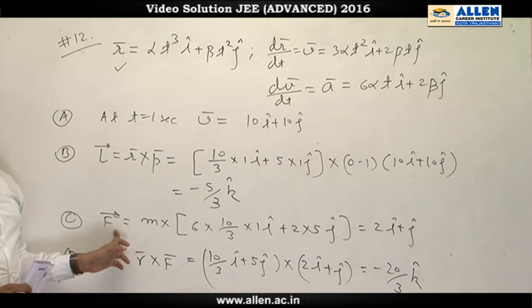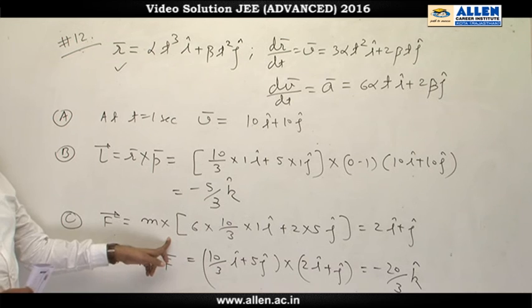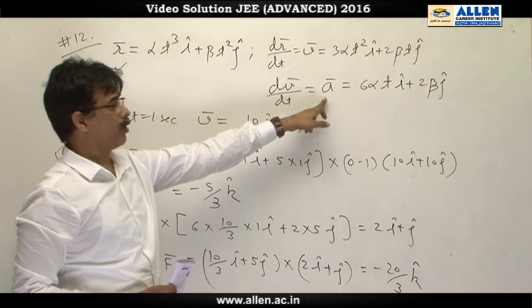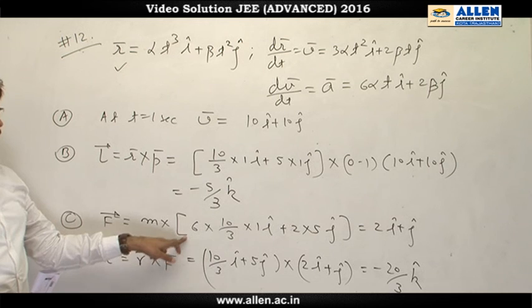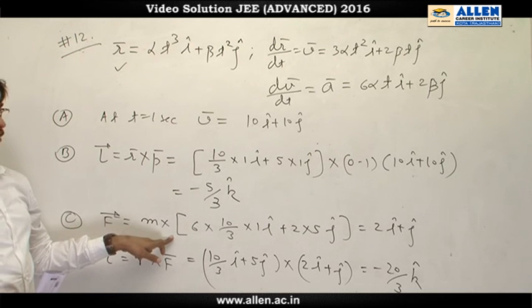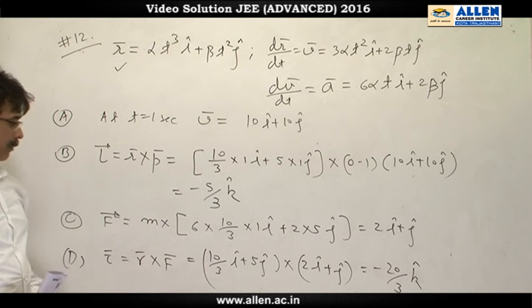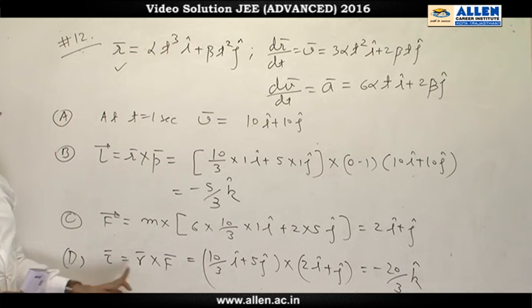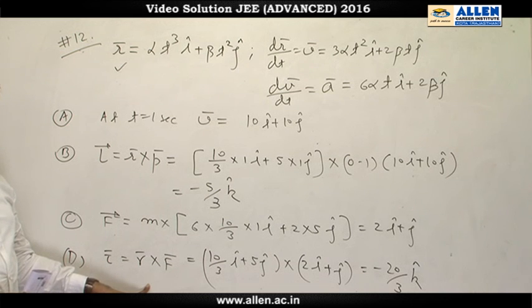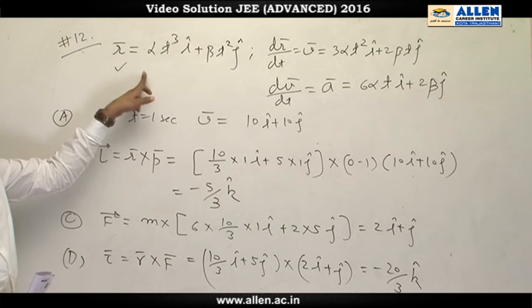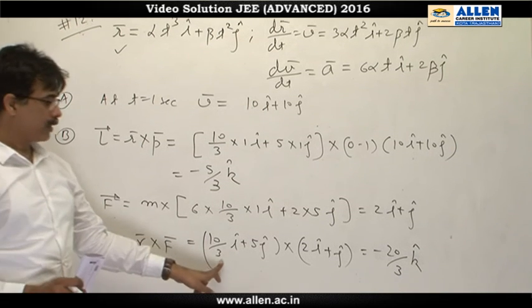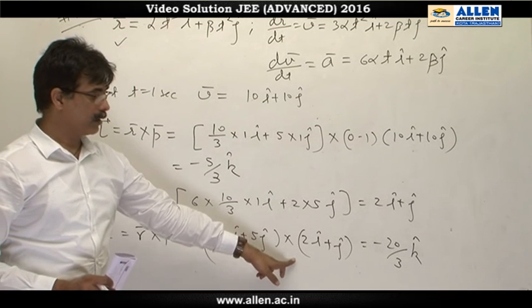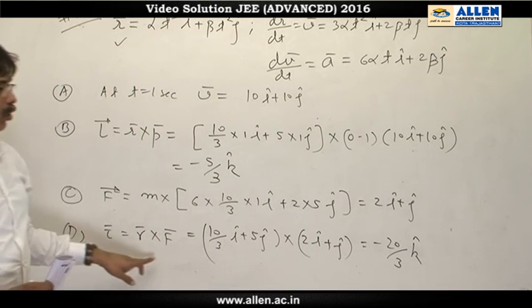Force vector is mass into acceleration, and we have already derived the acceleration vector. So mass into acceleration is force vector. Finally, torque vector is r cross f. We know position vector as well as force vector. Taking cross product of r vector and force vector, we get torque vector.